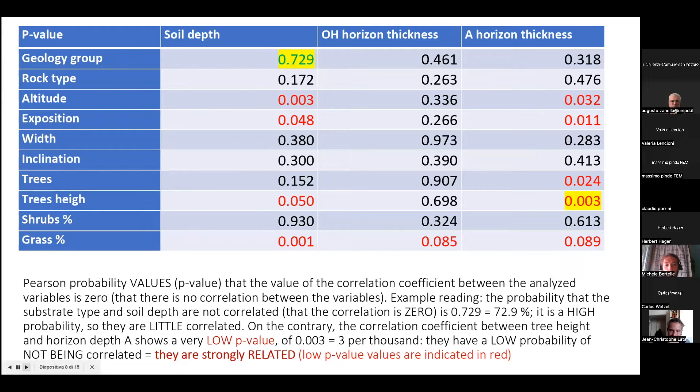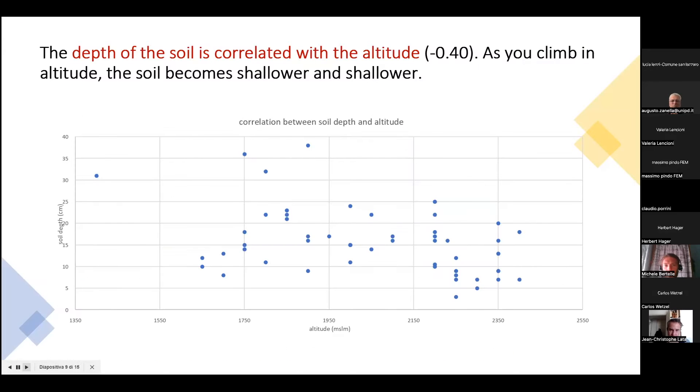But other things like altitude and exposition, for example, are really strongly related. So we found the relation between soil characteristics and some of the characteristics of the place, of the areas we studied. Here, for example, is the correlation between altitude and soil depth.